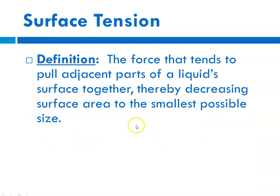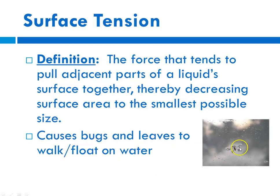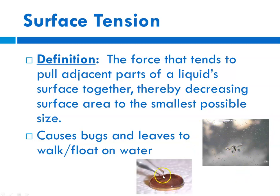Surface tension, by definition, is the force that tends to pull parts of a liquid surface together, decreasing the surface area to the smallest possible size. It's what causes bugs to walk and leaves to float on water. Here is an example of a bug floating on the surface of a pond or lake, and an example of a droplet. What causes surface tension is the attraction of the molecules of the liquid to one another.